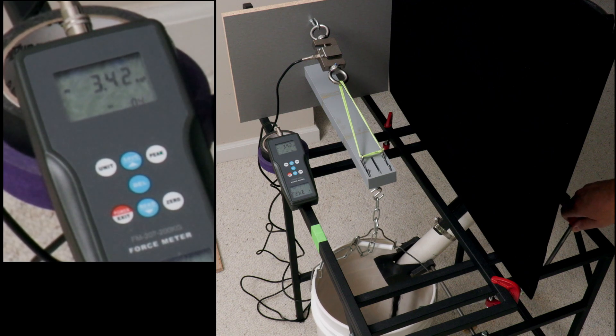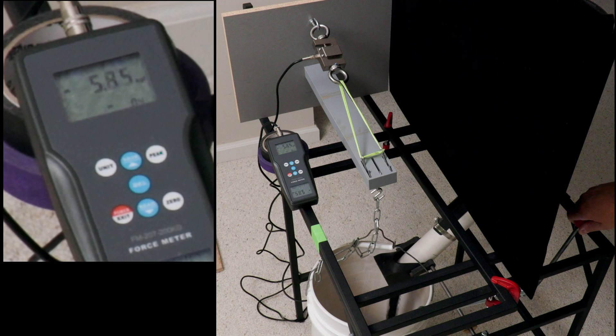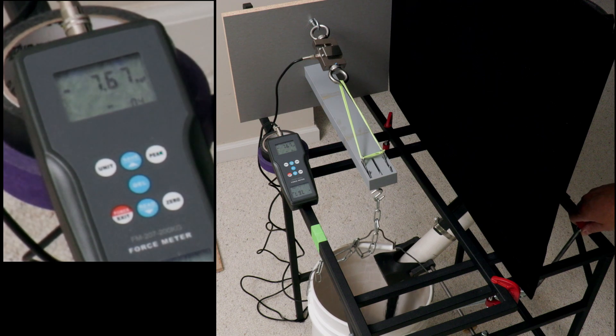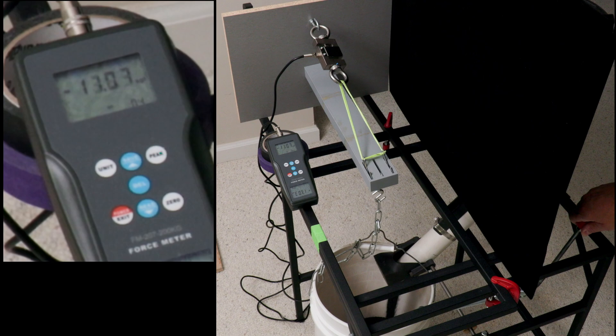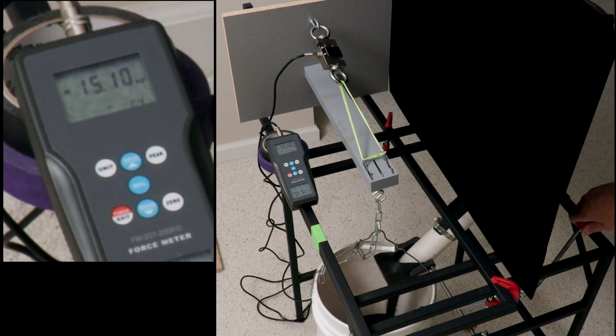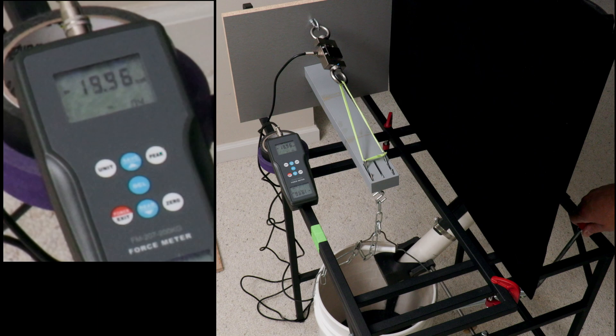Here is the moment of truth. The load cell was zeroed before hanging just the bucket, so once all the sand is loaded, it should add exactly 15 kilograms of load to the system. With a height of 15 centimeters and a length of 41 centimeters, our predicted tension load is 43.7 kilograms, let's see what happens.